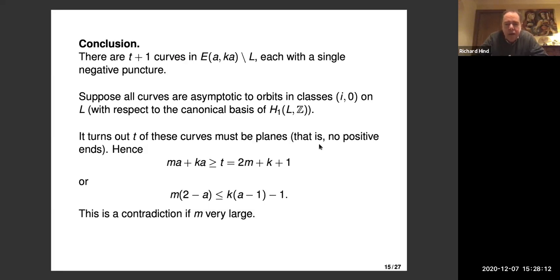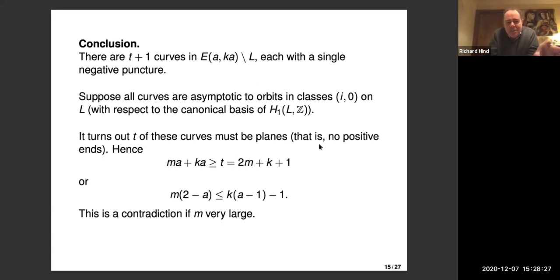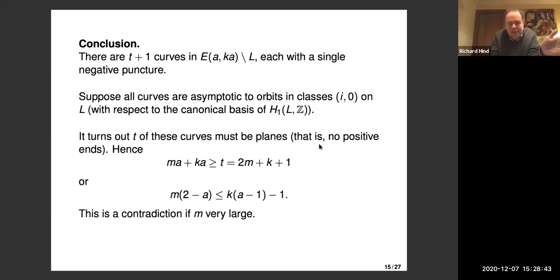These holomorphic curves at the top level have a negative end asymptotic to a geodesic on the Lagrangian. There are T+1 curves in the top level. The claim is you can read off the constraints from this. There are two cases. To get the conclusion we need M to be very large — M is the number of positive ends of curves in our moduli space asymptotic to the short orbits on the big ellipsoid.